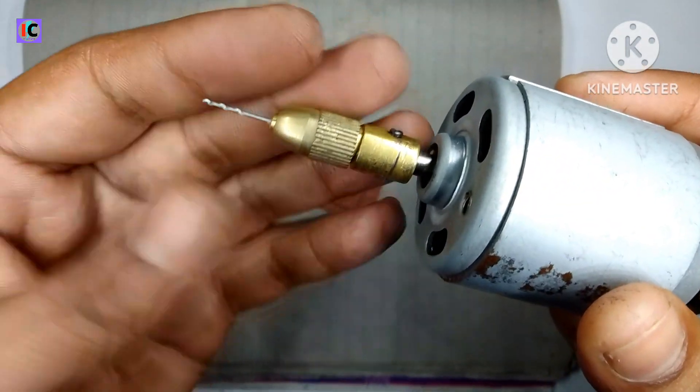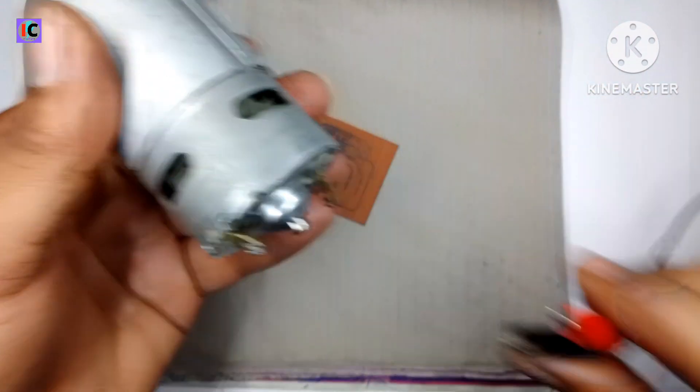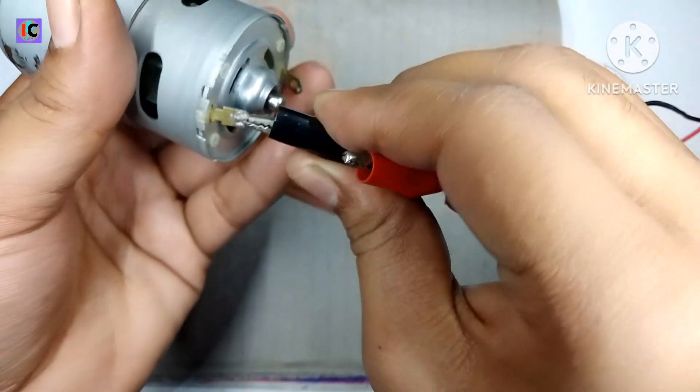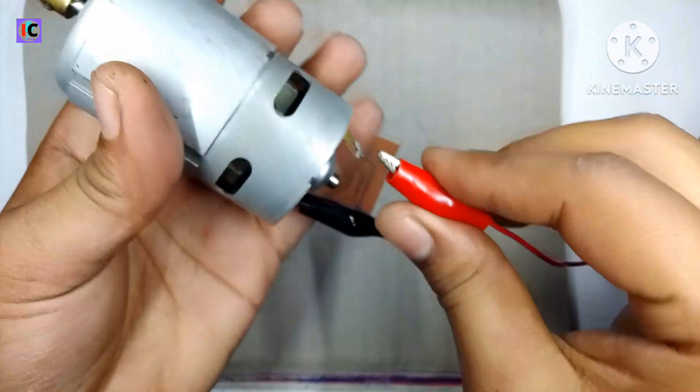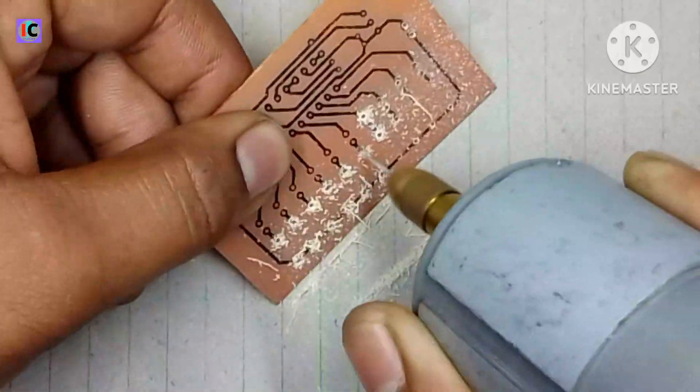It's time for PCB drilling. Here I'm using a small DC motor and 0.8 mm drill bit, and I drill all the holes as shown on the PCB.